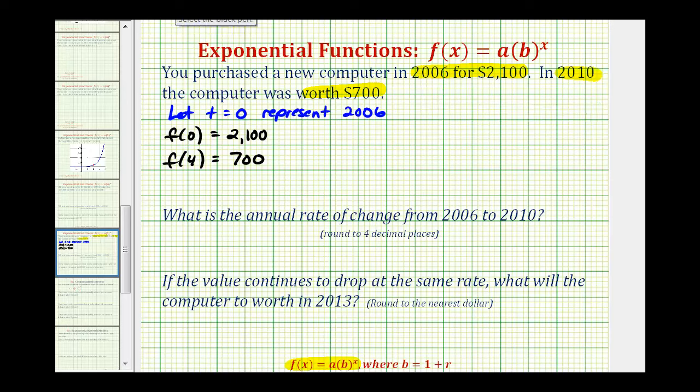Because we're using the variable t, so far we know that f of t is equal to 2,100 times b raised to the power of t. And notice how when t is equal to zero, this function value is equal to 2,100, because b to the zero power is equal to one.